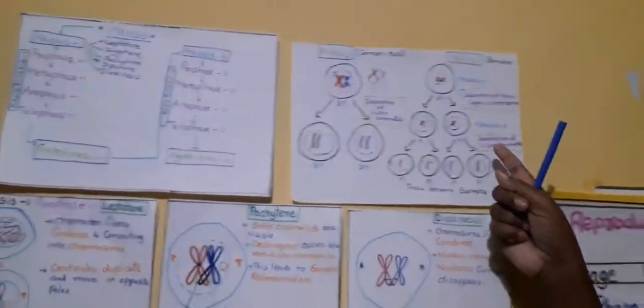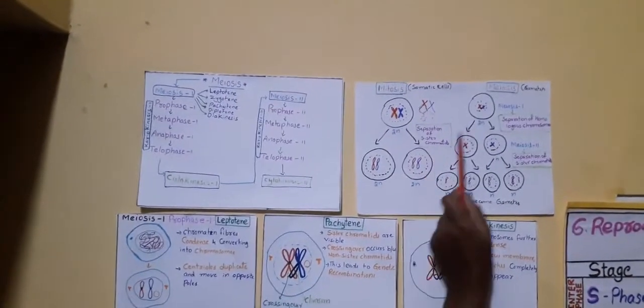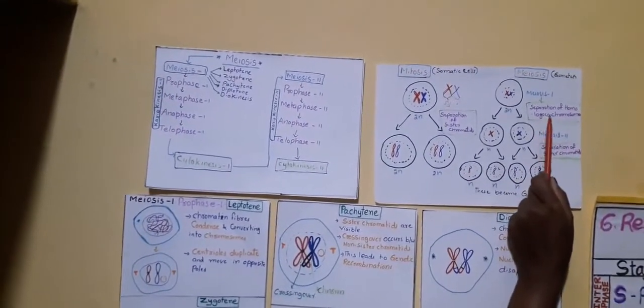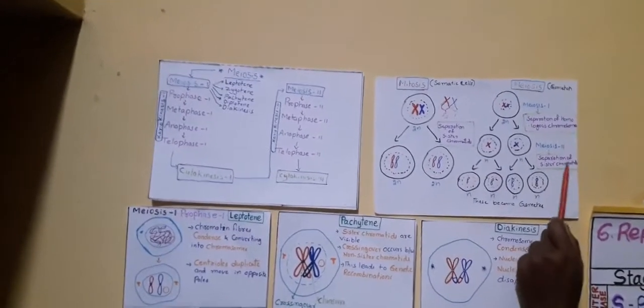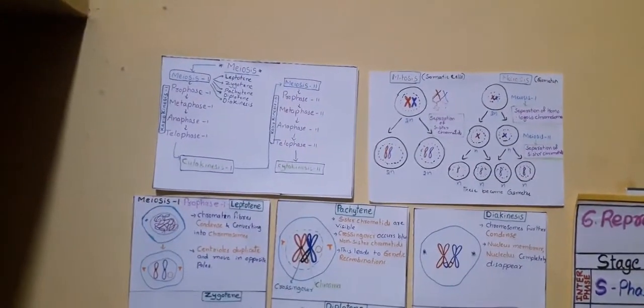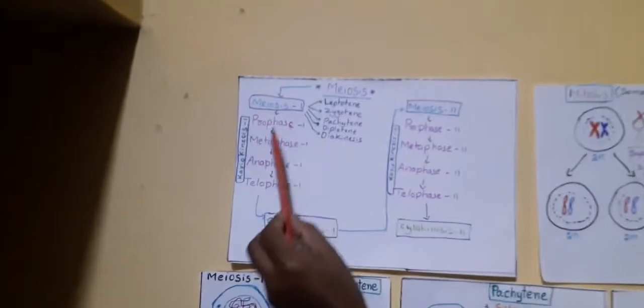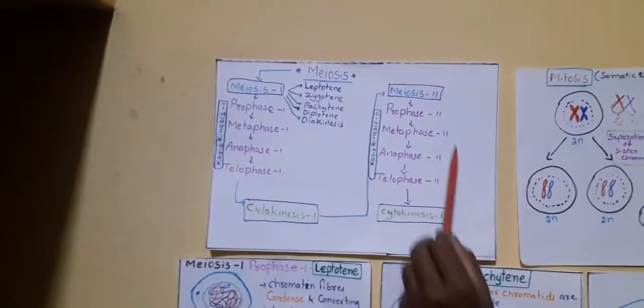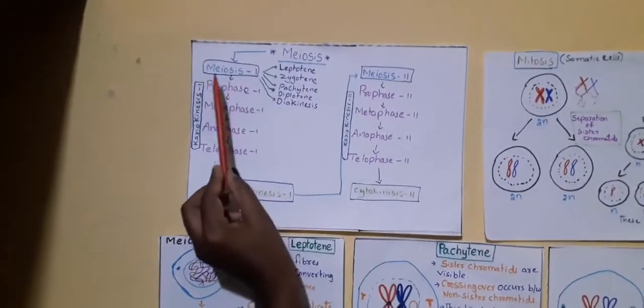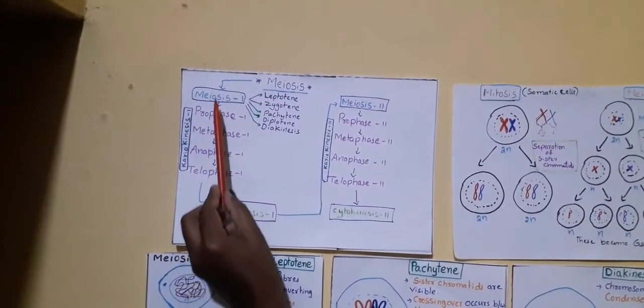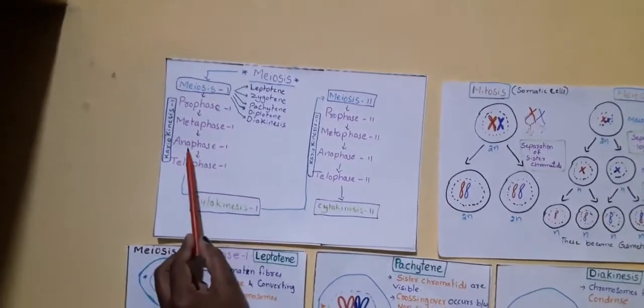What are the major steps involved in meiosis? To remember: in mitosis, separation of sister chromatids takes place; in Meiosis I, separation of homologous chromosomes; and in Meiosis II, like mitosis, separation of sister chromatids again takes place. Meiosis has two types: Meiosis I and Meiosis II. In Meiosis I, the phases are Prophase I, Metaphase I, Anaphase I, and Telophase I.